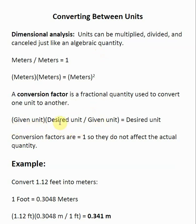That conversion factor will have two units in it. On the top, it will have the unit that we are trying to get to. On the bottom, we will have the unit that is given. If I'm multiplying by a given unit and dividing by a given unit, these two will cancel, and what I'm left with is my desired unit. So a conversion factor is a ratio of one unit to another, and the main idea is to make sure we have the right unit on top and the right unit on the bottom.